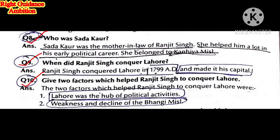Who was Sada Kaur? Sada Kaur was the mother-in-law of Maharaj Ranjit Singh. She helped him a lot in his earlier political career when he was seeking to capture political power. When did Maharaj Ranjit Singh conquer Lahore? In 1799 AD, and he made it his capital. Give two factors which helped Maharaj Ranjit Singh conquer Lahore: first, Lahore was the hub of political activities.